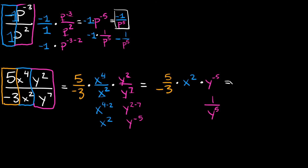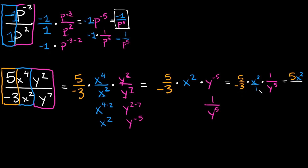How do you deal with a negative exponent? Well, again, you just have to put it under 1. So it's going to be 1 over y to the positive 5th. So then multiplying this out, we're going to have 5 over negative 3, times x squared, times 1 over y to the 5th. You can think of x squared as x squared over 1. So on top we have 5 times x squared times 1, which equals 5x squared, and that goes over the bottom: negative 3 times 1 times y to the 5th, which would be negative 3y to the 5th. This would be your final answer.